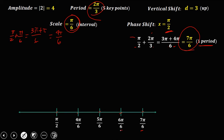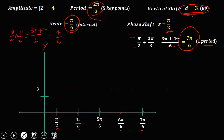You can reduce these fractions as needed. Since the first key point is positive, the y-axis is to the left of the first key point. From the vertical shift d equals 3, move up 3 units — 1, 2, 3 — to establish the new x-axis.